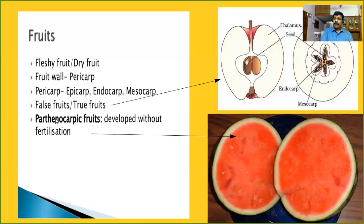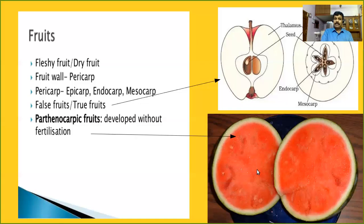Banana, pineapple, etc. are considered natural parthenocarpic fruits. Nowadays, we can induce parthenocarpy in a plant by using different types of plant hormones. Such fruits may be seedless. This shows a seedless melon produced as a result of parthenocarpy. This is something about the fruit.